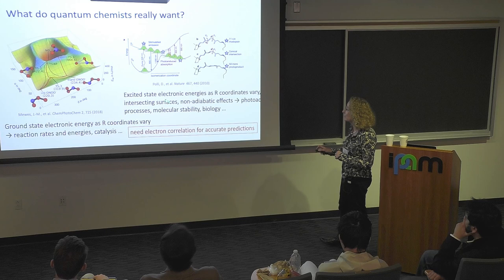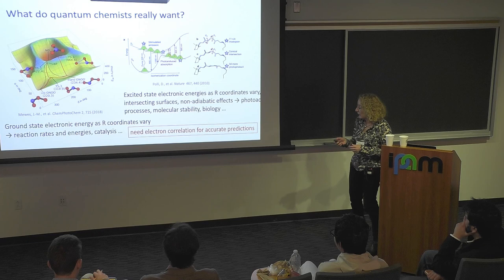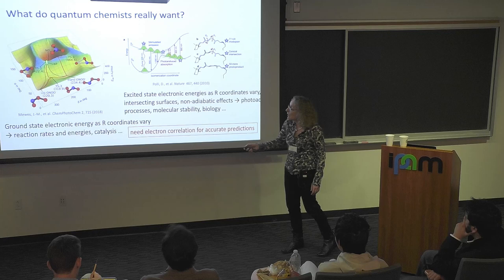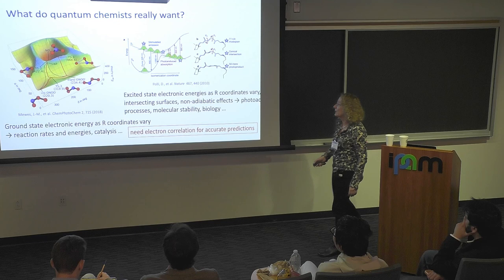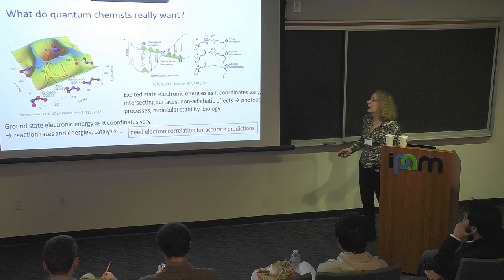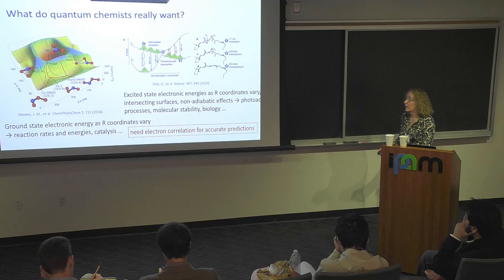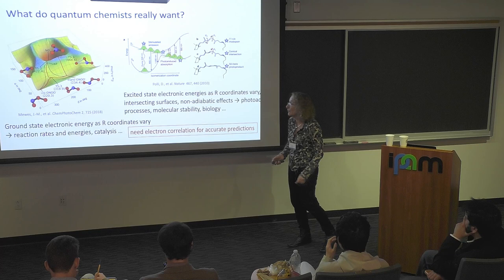These non-adiabatic effects are very important, certainly in biological systems. In order to make accurate predictions around transition states, we need to know what the electron correlation is — that 5% energy that you might think is not very important. But if we want to know whether a rate will proceed under certain conditions, we need that energy quite accurately.